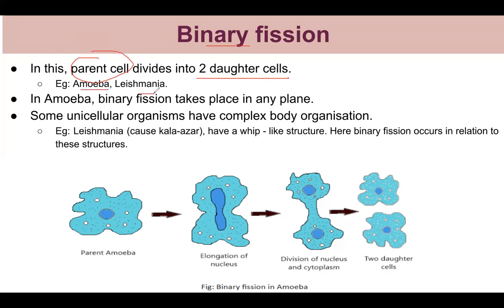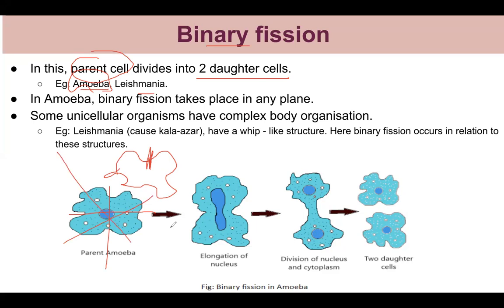The type of binary fission depends on what type of organism it is. Amoeba has an irregular structure, so fission can happen in any plane — it becomes binary fission from any plane. For more complex organisms with a definite structure, the division occurs in a specific plane, such as vertical or longitudinal.